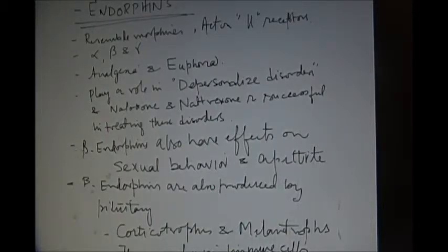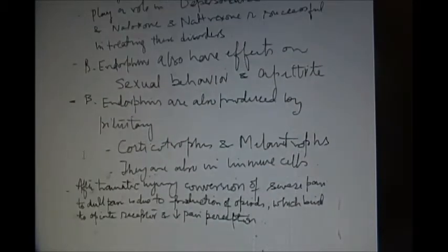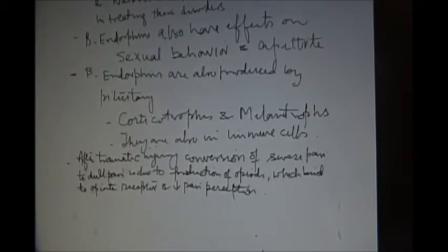The beta endorphins also affect sexual behavior and appetite. The beta endorphins are also produced by pituitary corticotrophs and melanotrophs. They are also present in immune cells.